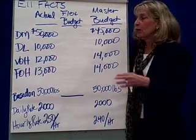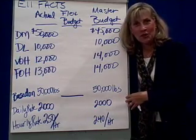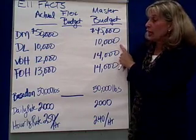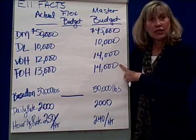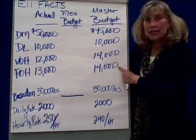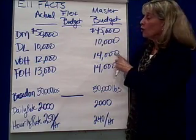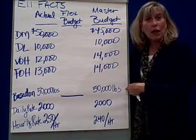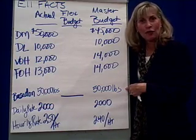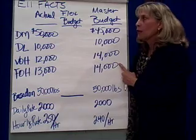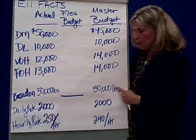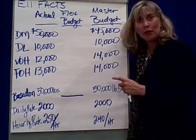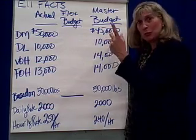At the beginning of the period, we set up a master budget for processing blueberries. We budgeted $45,000 for blueberry costs, $10,000 for labor, $14,000 for variable overhead, and $14,000 for fixed overhead. The master budget was also based on 50,000 pounds — which is lucky — because now we can compare actual with master budget since they're based on the same number of pounds produced. It's like comparing blueberries to blueberries instead of oranges to blueberries.